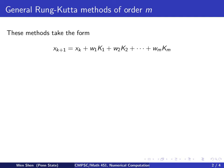So we begin with looking at general Runge-Kutta methods of order M. These methods take the following form. So the next value, xk plus 1, is computed by xk plus, in general, M constants, capital K1, K2, all the way to Km. And each of them will be multiplied by some corresponding weight: W1, W2, all the way to Wm.